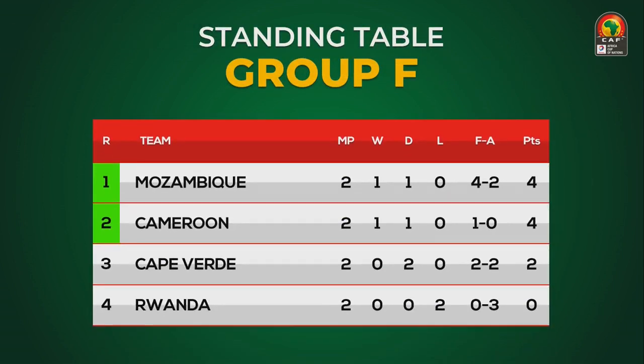In group F, the top of the table is Mozambique, followed by Cameroon in second, Cape Verde and Rwanda below it.